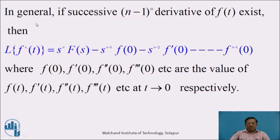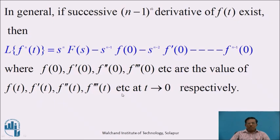By knowing this concept, in general, if successive (n−1)th derivative of f(t) exists, then the Laplace of the nth derivative of f(t) can be written as s^n·F(s) − s^(n−1)·f(0) − s^(n−2)·f'(0) − ... − f^(n−1)(0), where f(0), f'(0), f''(0), f'''(0), etc. are the values of f(t), f'(t), f''(t), f'''(t), etc. at t tending to 0 respectively. Note that this property is highly used in solving ordinary differential equations with initial conditions.